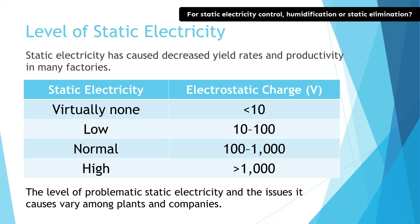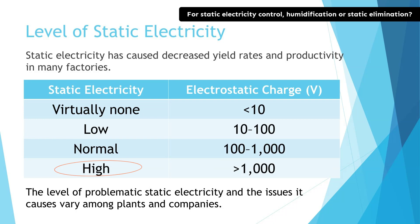In factories, static electricity comes in different levels or ranks. Take a look at the volts on this chart, measuring electrostatic charge. Anything under 10 volts means there's almost no static electricity. Between 10 and 100 volts is considered low. The range from 100 to 1,000 volts — that's 1 kilovolt — is pretty normal. When it goes over 1,000 volts, it's a significant level. There are roughly four levels of static electricity, and in manufacturing different products, static electricity has a big impact — it can lower product quality and productivity directly and significantly.